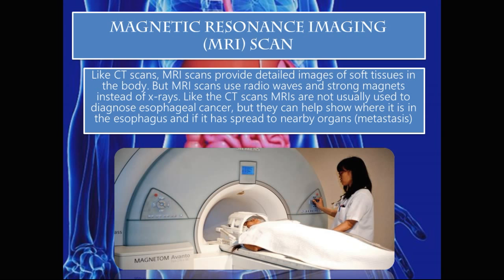Magnetic resonance imaging (MRI scan): Like CT scans, MRI scans provide detailed images of soft tissues in the body, but they use radio waves and strong magnets instead of X-rays. MRIs are not usually used to diagnose esophageal cancer, but can help show where it is in the esophagus, whether it has spread to nearby organs, or if the cancer has metastasized.